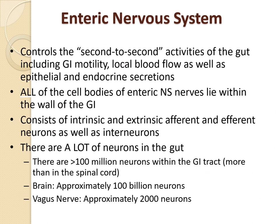The innervation of the GI tract includes intrinsic and extrinsic nervous systems. The intrinsic nervous system is also called the enteric nervous system and controls second-to-second activities of the gut, including motility, local blood flow, and epithelial and endocrine secretions. All cell bodies of the enteric nervous system lie within the wall of the GI tract. It consists of intrinsic and extrinsic afferent and efferent neurons as well as interneurons, and there are more than 100 million neurons within the GI tract.